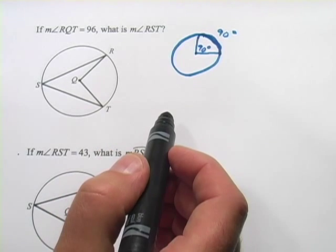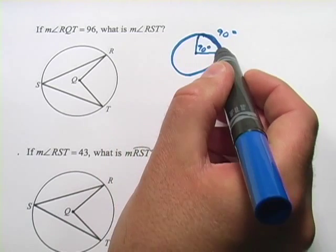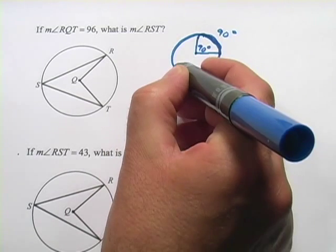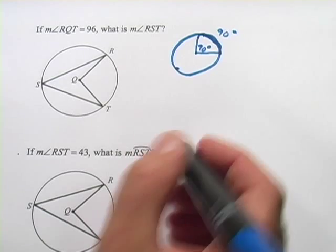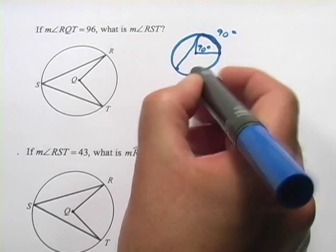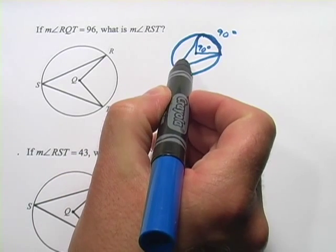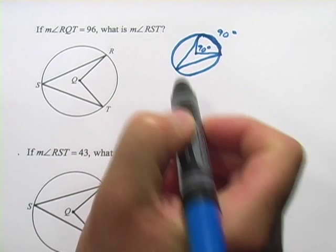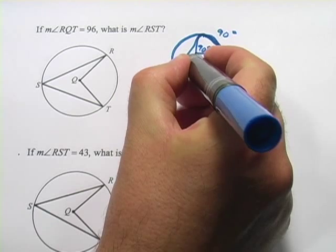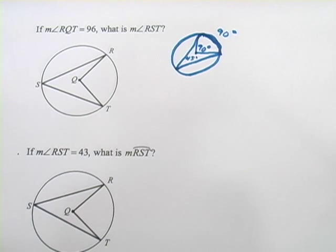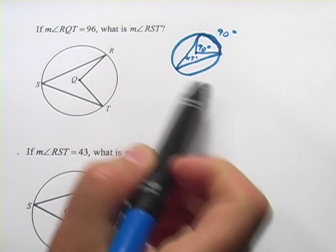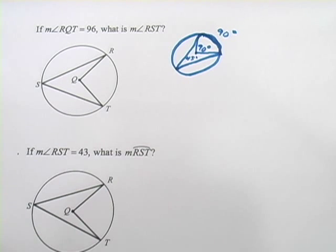Now one other relationship you need to know here is what if this same arc length were cut off by an angle that started on the opposite side of the circle. Well, if you were to measure that, you would find this angle here is exactly half of the central angle. So that's 45 degrees in there, and it's that relationship that's going to govern everything in these problems.